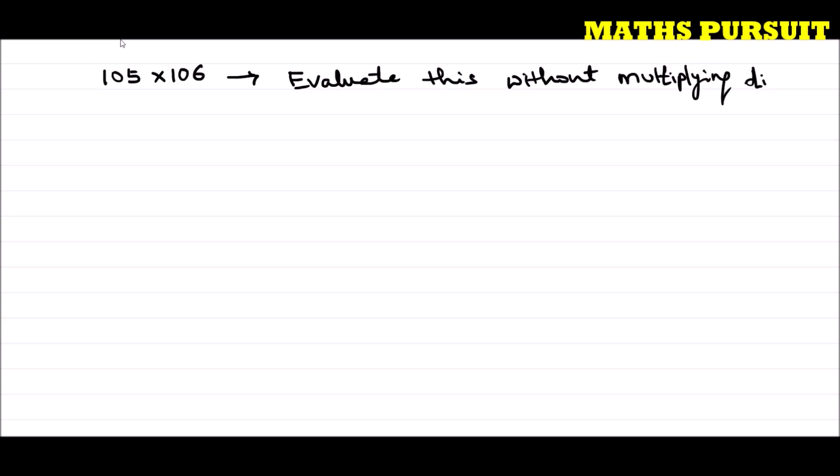The question is asking us not to multiply directly. That means if I multiply 4 into 2, that is 8 - that's direct multiplication. But here we need to follow a different approach.